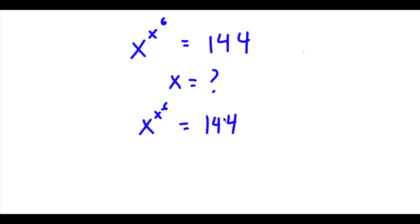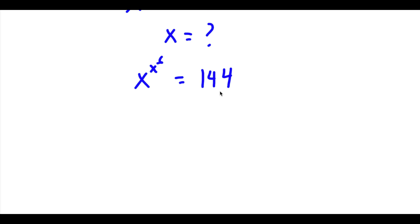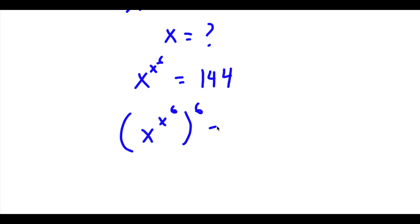Now what I'm going to do is take the power of 6 on both sides. So now I have x to the power of x to the power of 6, all to the power of 6, is equal to 144 to the power of 6.